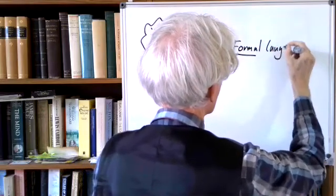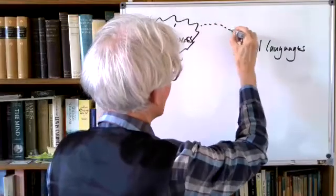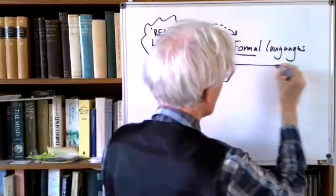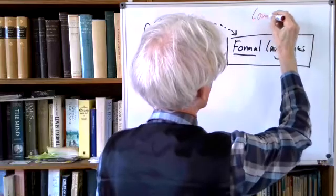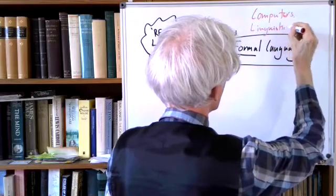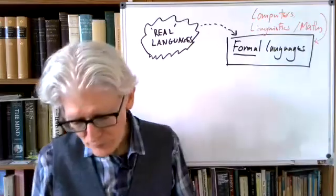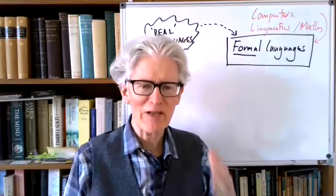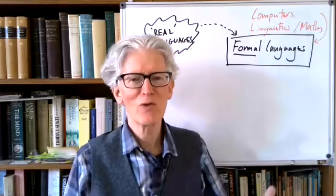Our real languages, of course, inform how we think these formal languages are going to be. Computers, linguistics, mathematics — they all deal with formal languages. And when we point to one of these formalized languages, it becomes a mathematical object itself, susceptible to all the tools that you can bring to bear from mathematics.